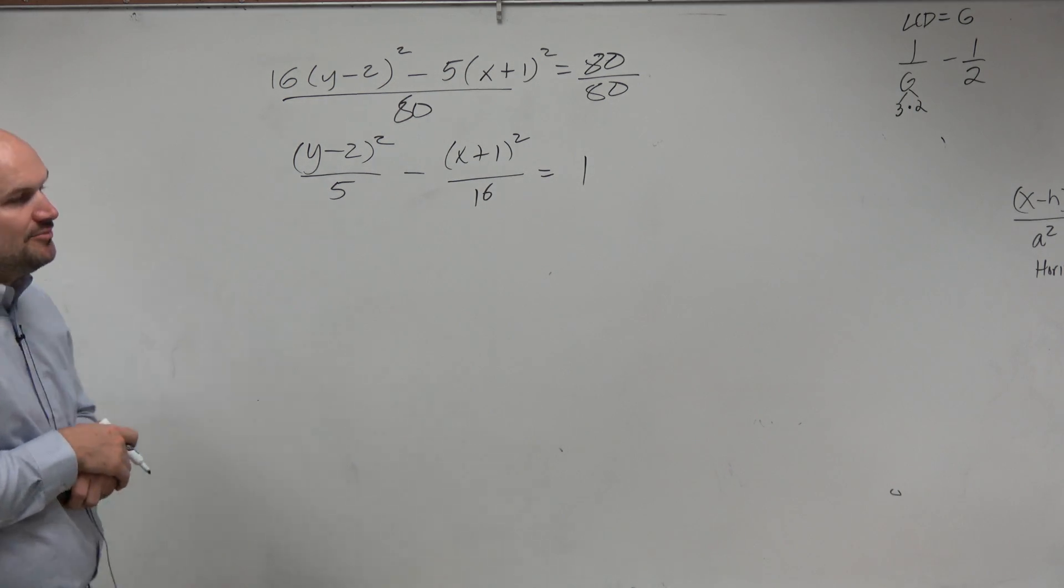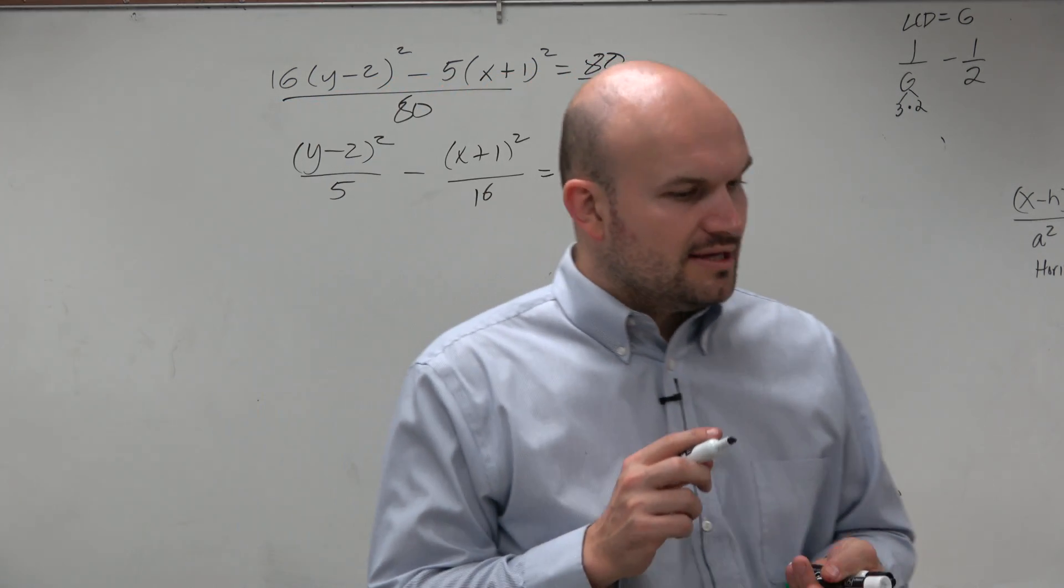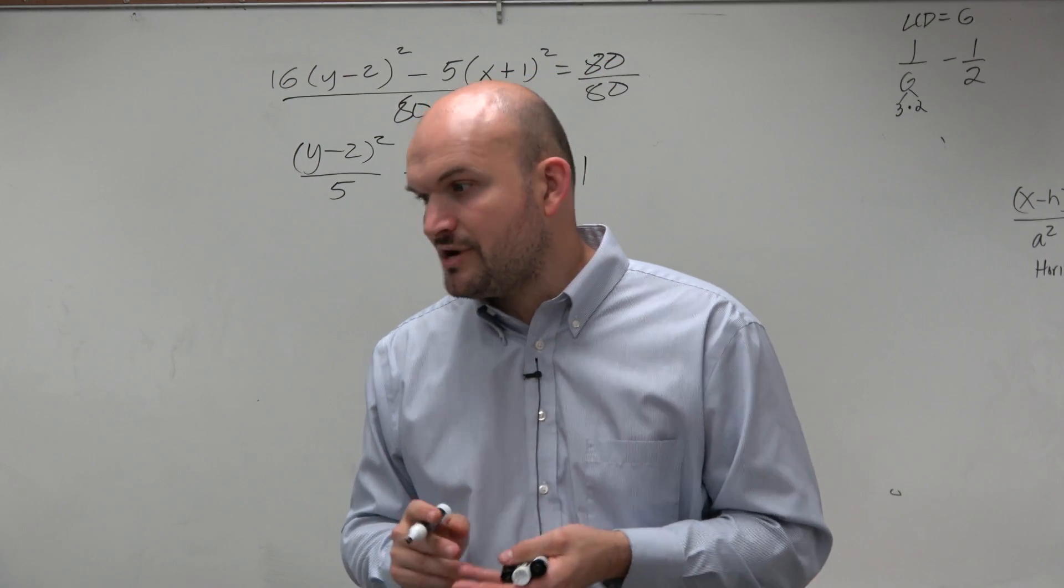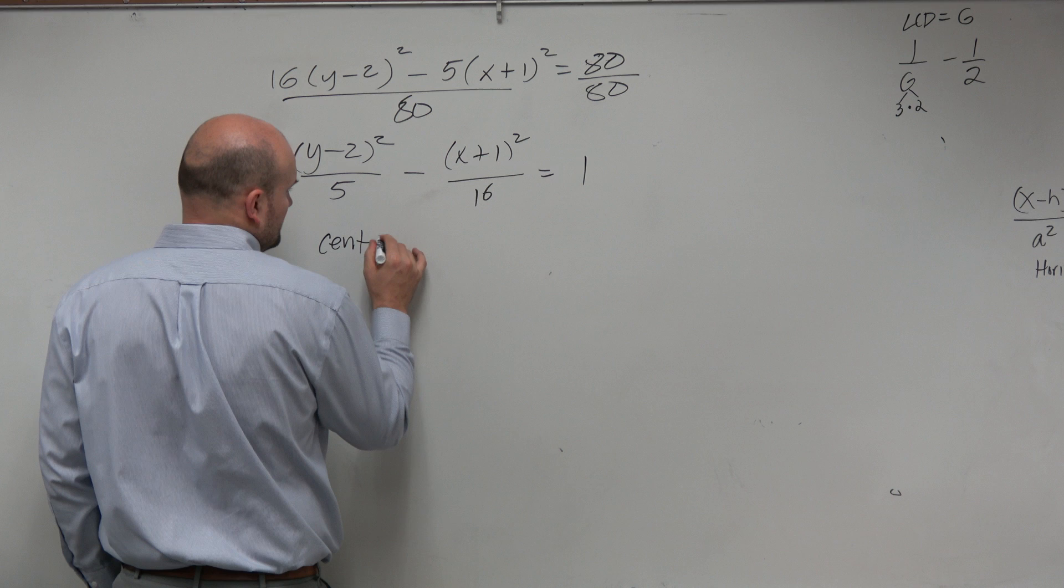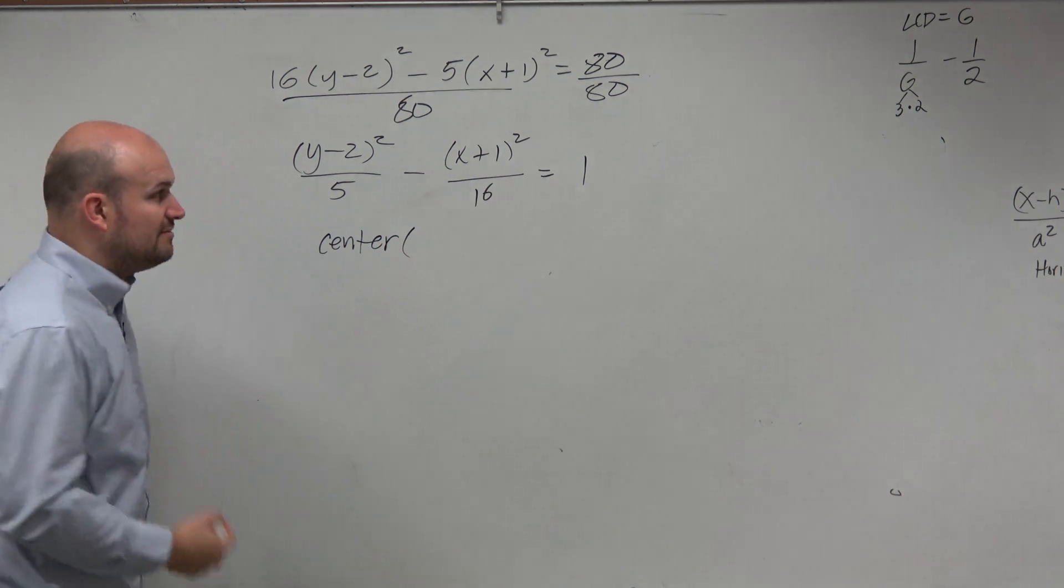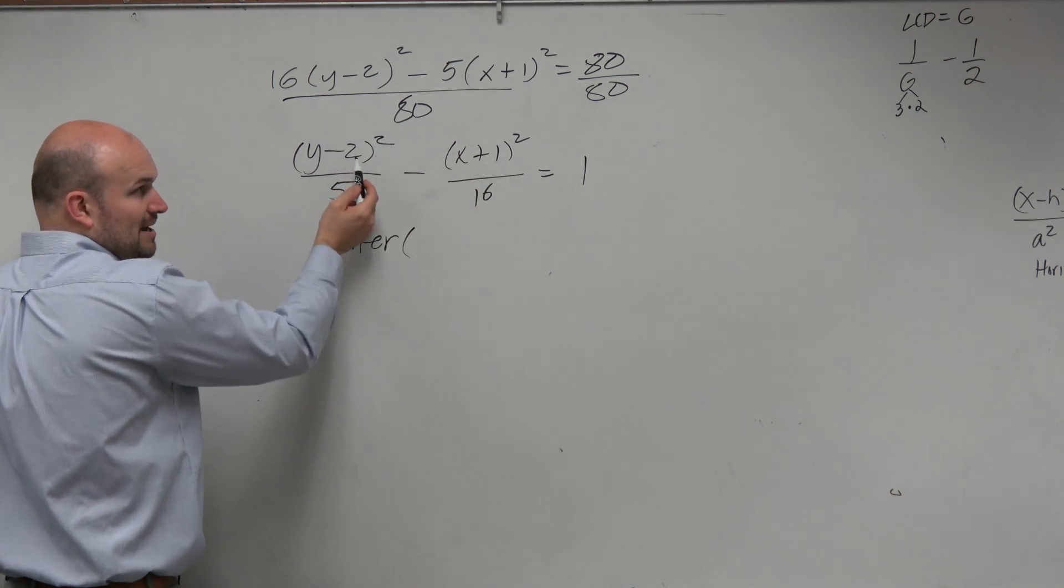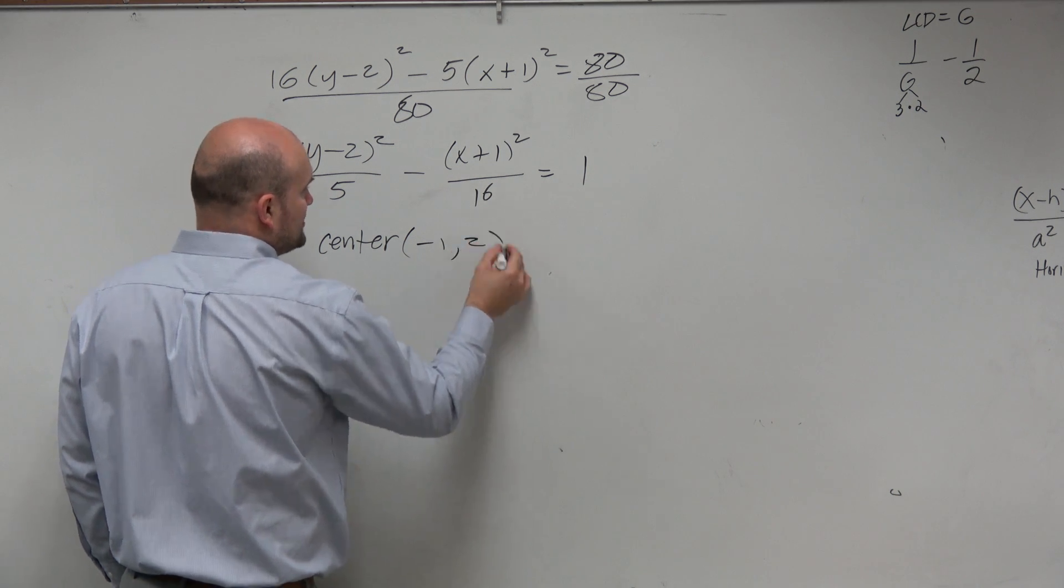So now we want to be able to look at identifying the foci, the vertices, and the major axis. So first thing, center. That's rather easy. Center is your h,k. Remember, it's x minus h, y minus k. So therefore, this is going to be negative 1 comma 2. Be careful with that.